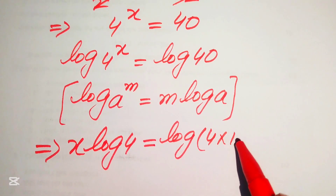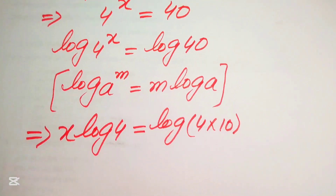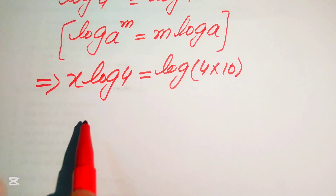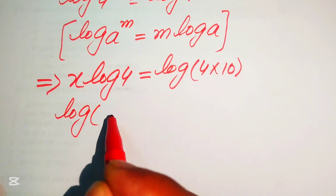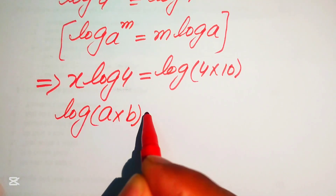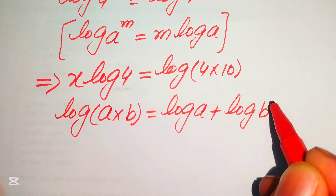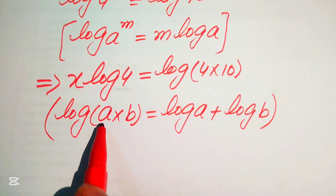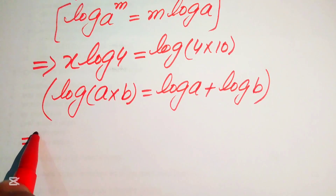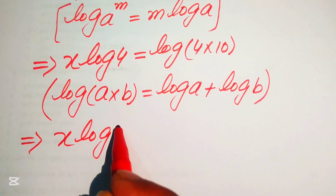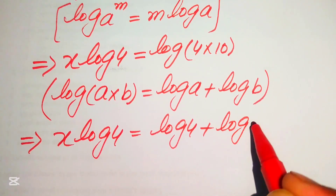We write 40 as 4 multiplied by 10. Then we apply the product property of log: log of a multiplied by b equals log of a plus log of b. According to this property, we break the right side and write x times log 4 equals log of 4 plus log of 10.